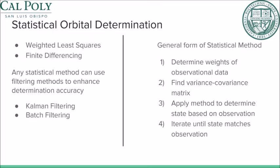Statistical orbit determination methods are currently the most common form of satellite tracking. There are several types of statistical methods used for orbit determination. The method used by the squadron is the weighted least squares method. Another common method is that of finite differencing. Both of these methods apply a similar process to determine the orbit of an object, based on the location and time of an observation from a site, where a weight can be applied to each measurement.